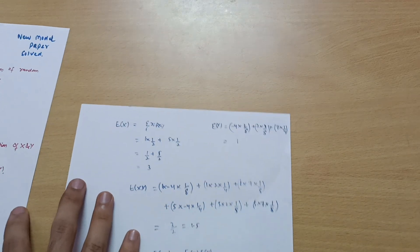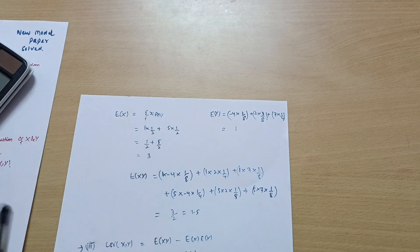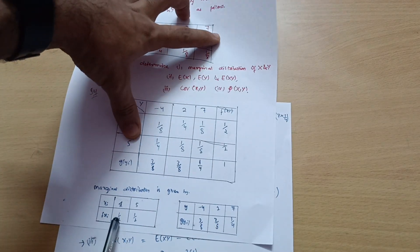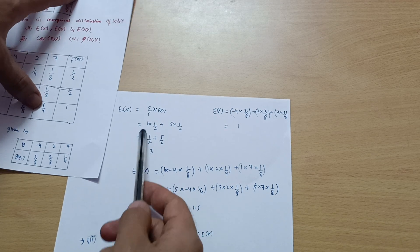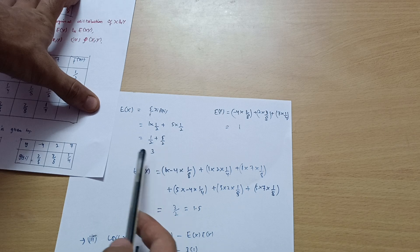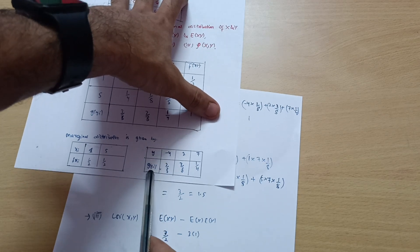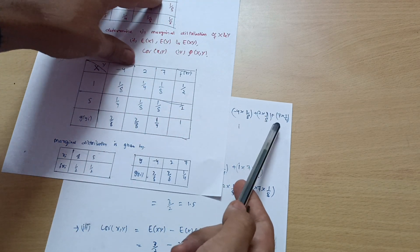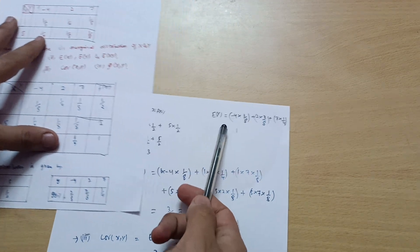Now we calculate the expectation of X and expectation of Y. E(X) = Σ xᵢ · f(xᵢ), which is 1 × 1/2 + 5 × 1/2 = 3. Then E(Y) = Σ yᵢ · g(yᵢ), which is (-4) × 3/8 + 2 × 3/8 + 7 × 1/4 = 1. So E(X) = 3 and E(Y) = 1.